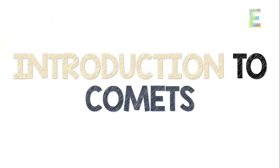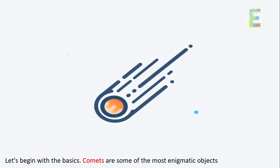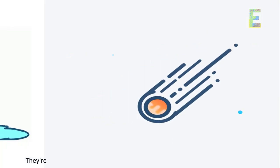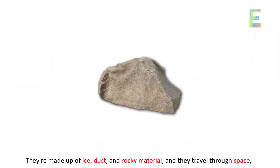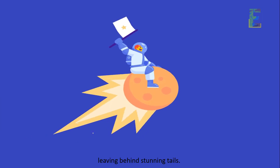Introduction to comets. Let's begin with the basics. Comets are some of the most enigmatic objects in our solar system. They're made up of ice, dust, and rocky material, and they travel through space, leaving behind stunning tails.